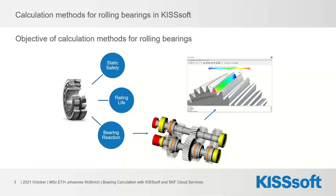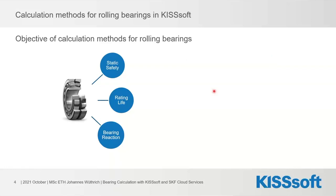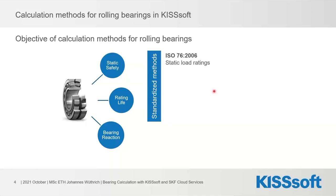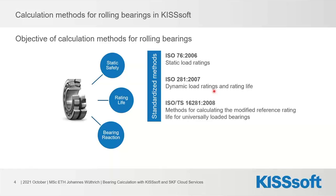For those three main objectives, KISSsoft has standardized methods implemented. We have ISO 76 for static rating and safety factors, ISO 281 for rating life and dynamic load rating, and then ISO TS 16281, which is a computationally oriented standard — made for use in software. While the first two can be used manually on paper, this third standard is much more advanced and requires software to be implemented.